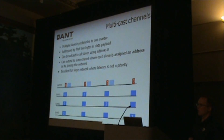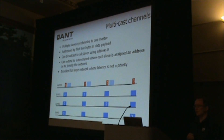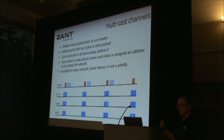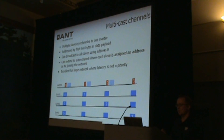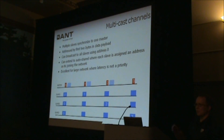So we introduced something called auto-shared channels. Auto-shared channels are basically an extension of the ANT protocol implemented at the application level, and they allow you to implement some handshaking as slaves join this network. The address of the slave is actually negotiated with the master on a real-time basis. As the slave comes into the network, it gets detected by the master, which detects that no address is assigned, and then assigns it a specific address so it only tries to talk to slaves that have actually joined the network.